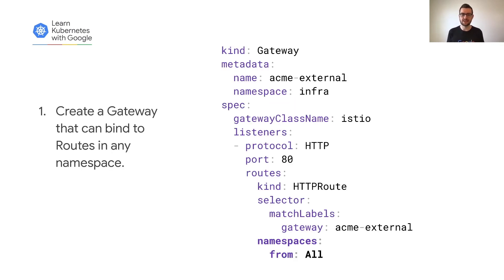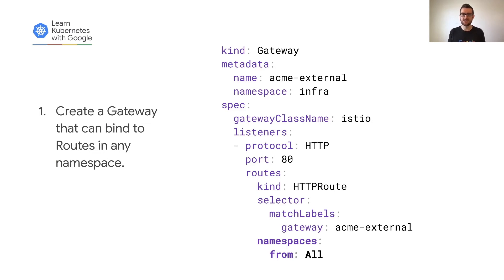First, we'll create a simple gateway. We'll be using Istio for this demo, but there are already many great implementations of this API to choose from. The key detail here is that we're specifying that the gateway can bind a route in any namespace. Although we could be more granular here by selecting a subset of namespaces, we're keeping this example as simple as possible.